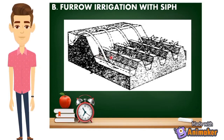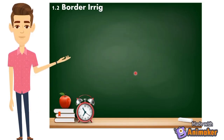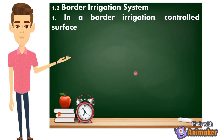The next one is furrow irrigation system with siphons. Yung siphons na ito, it's like a flexible pipe wherein sila yung kumukuha ng tubig or humuhigop ng tubig para mag-flow yung tubig going to the furrows. Unlike the other method, dito sa furrow irrigation with siphons, kailangan lang natin ng flexible pipes para mahigop yung tubig going to the furrows on our farm.